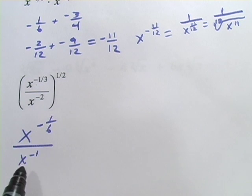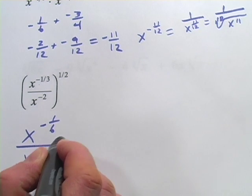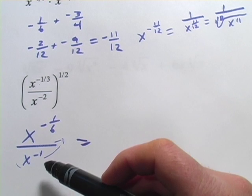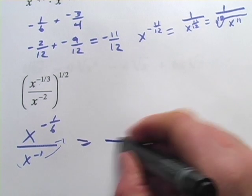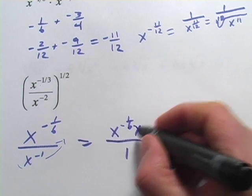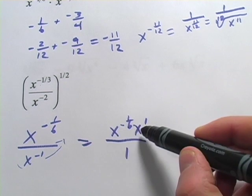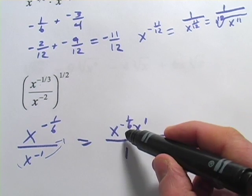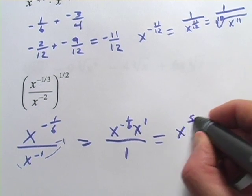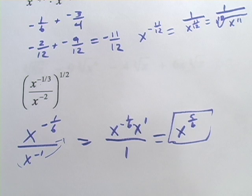So we get x to the negative one-sixth over x to the negative one. To simplify this, I'm going to move the bottom term — which has a negative exponent — to the top. That leaves a one on the bottom, which we'll ignore. On the top, we've got x to the negative one-sixth times x to the positive one, since the sign of the exponent changes when we move it up. Now we're multiplying these two, so we simply add the exponents: negative one-sixth plus one gives x to the five-sixths. We can drop the over one, and that's the final answer.